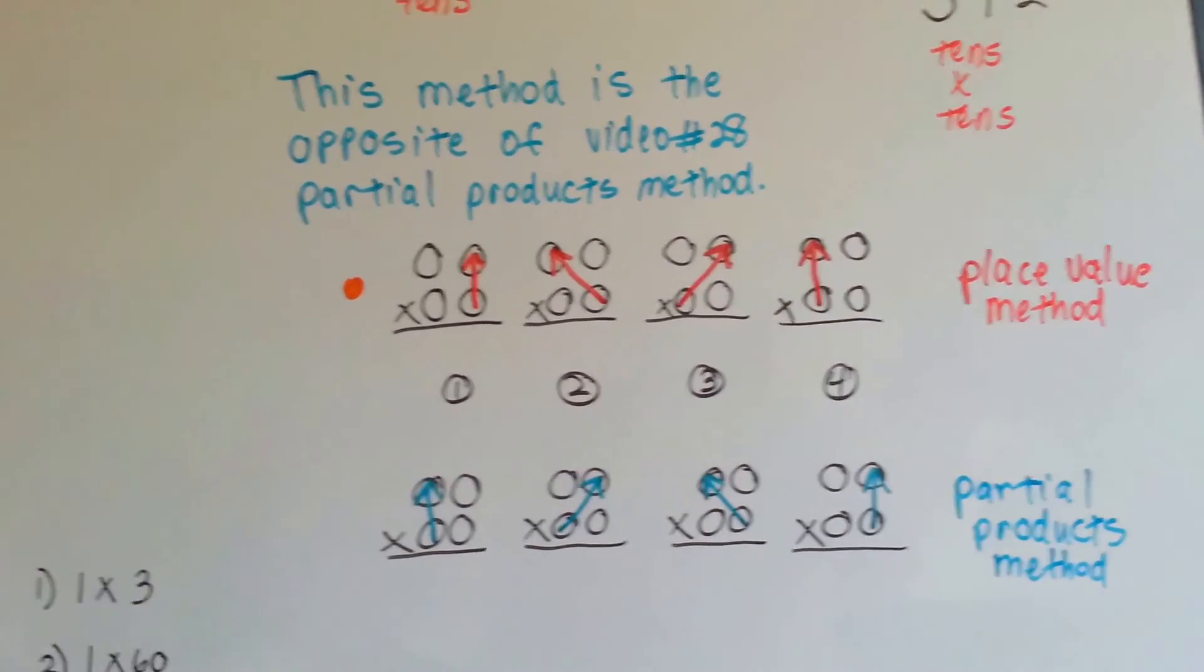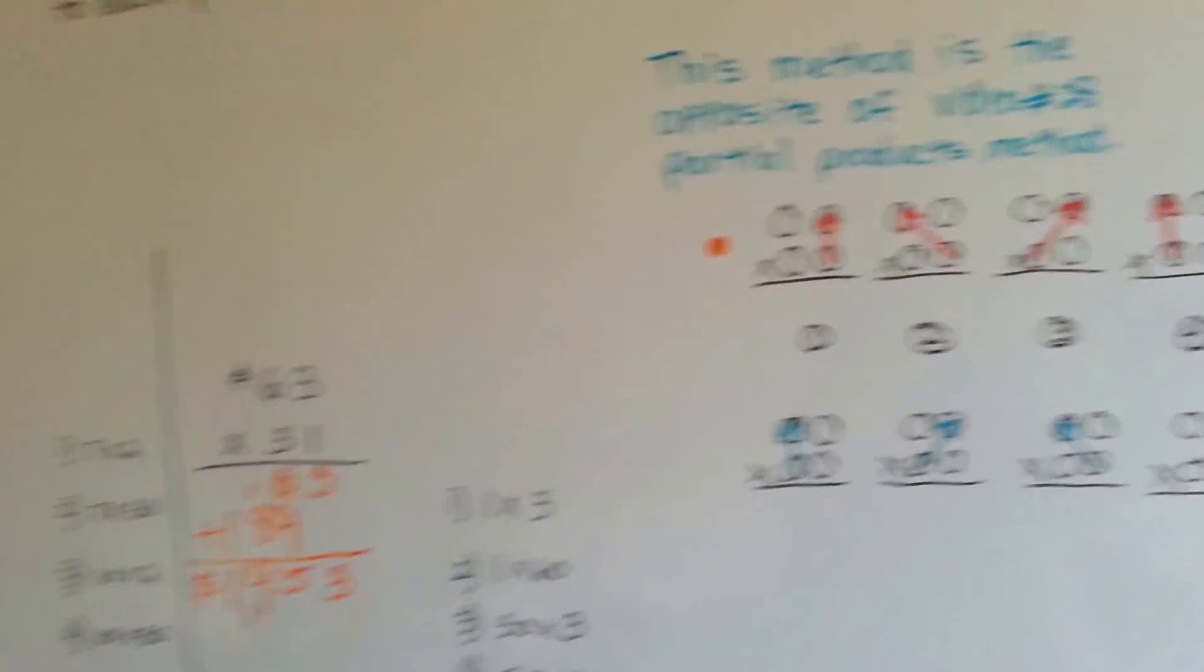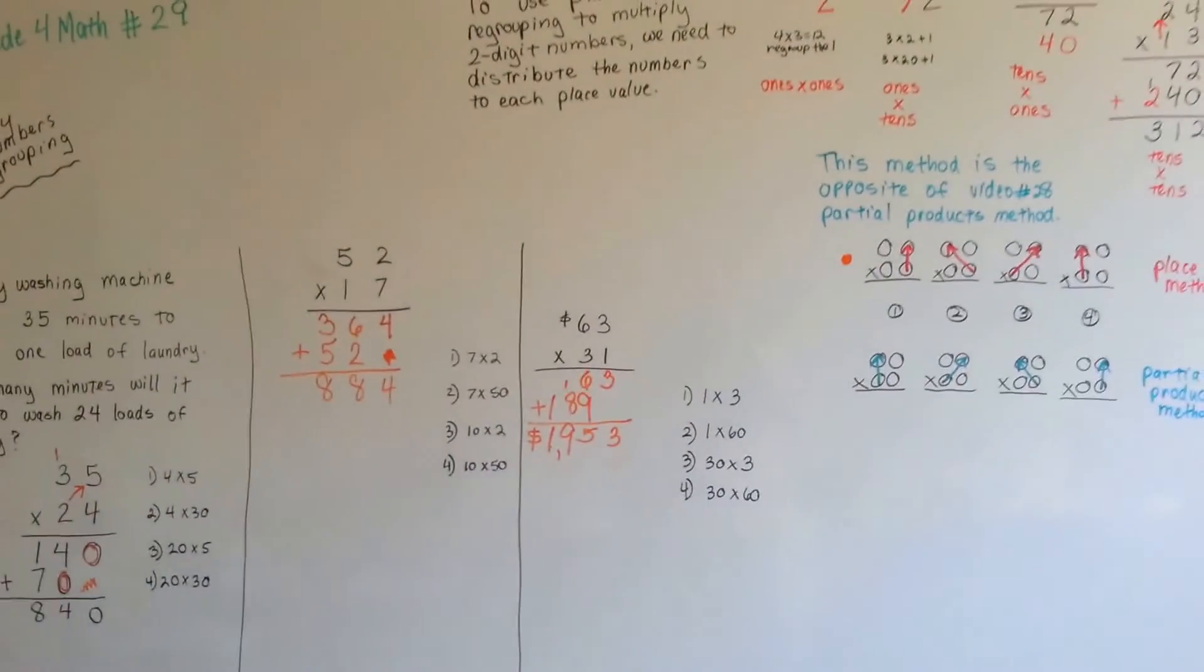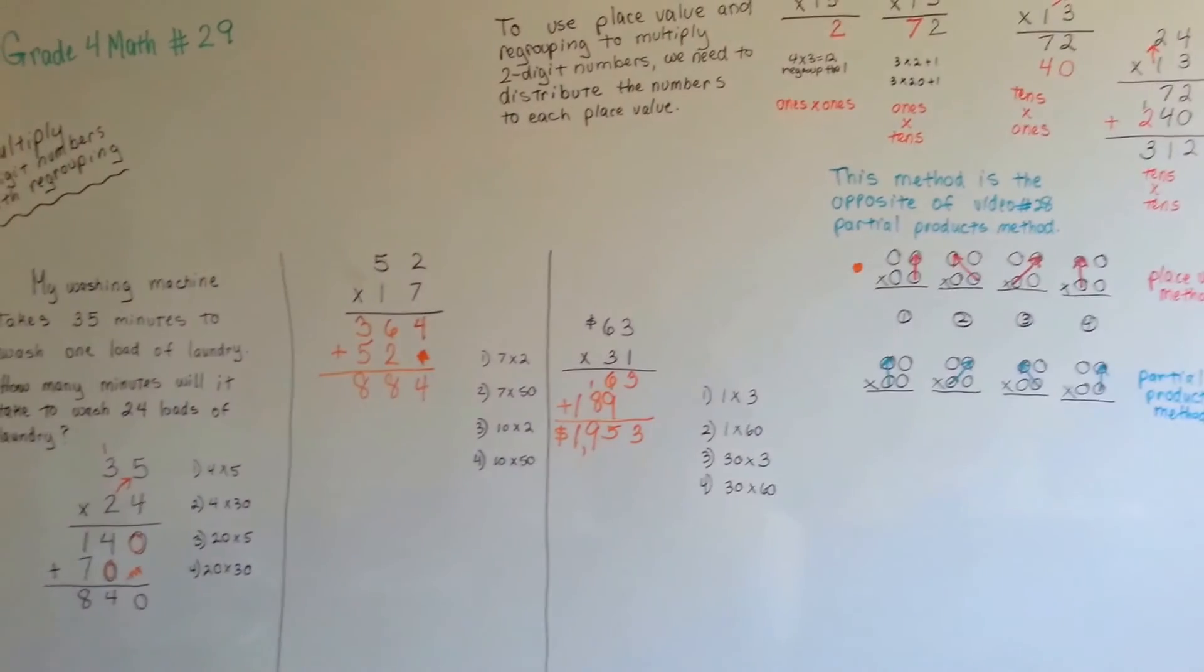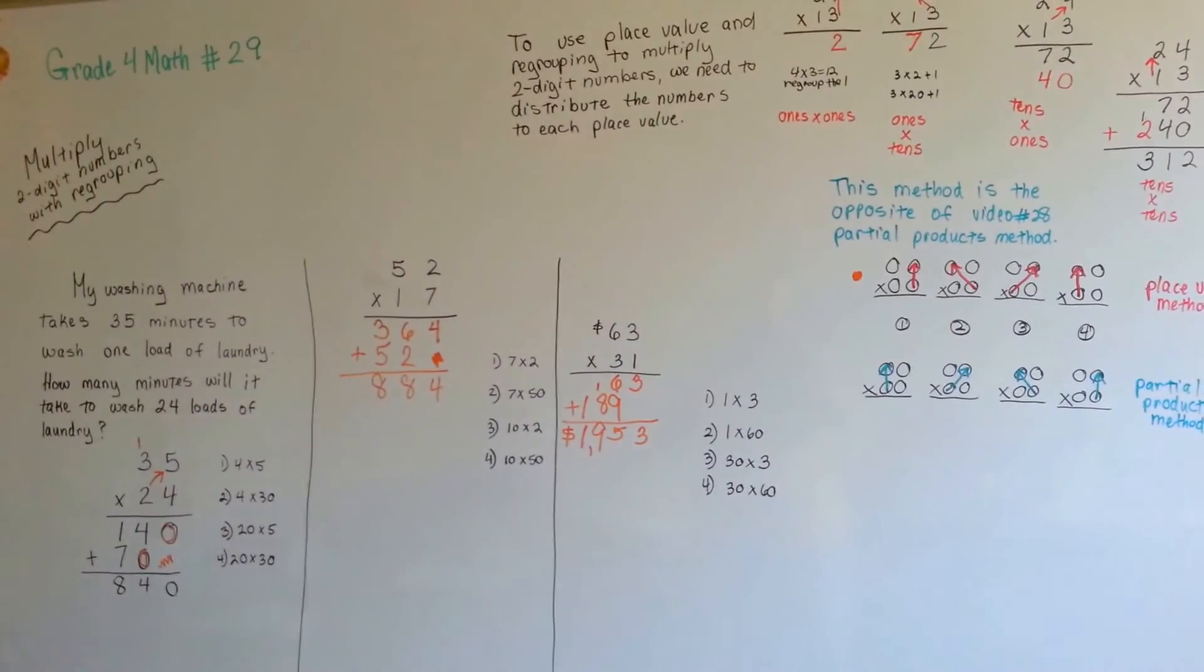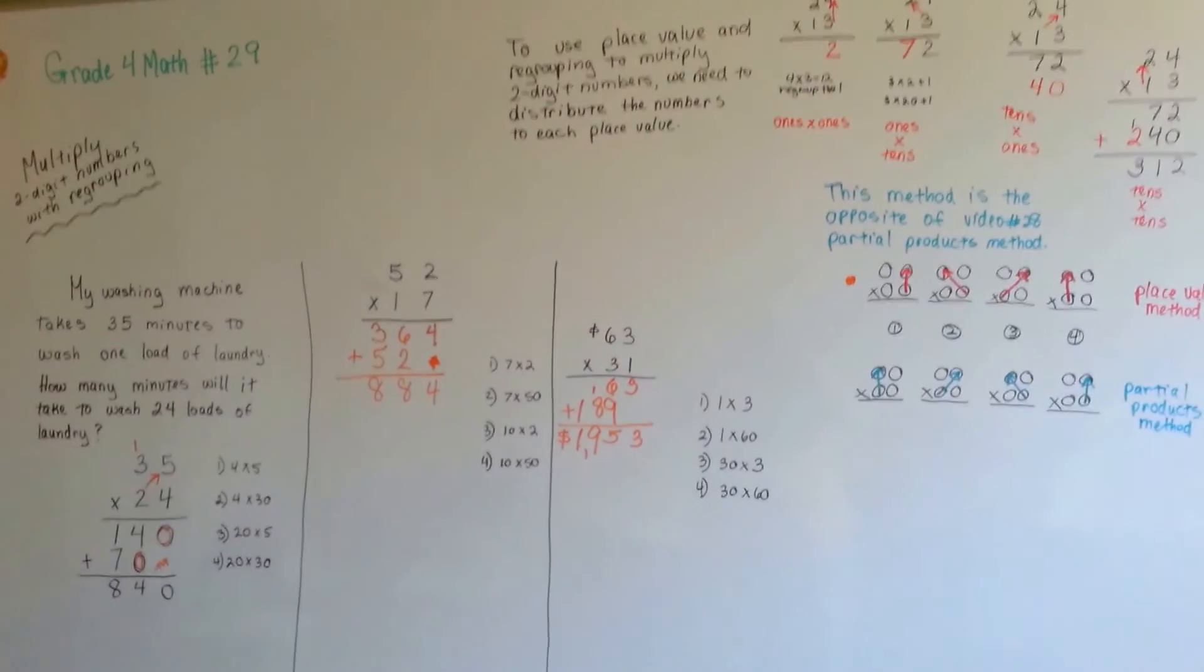So, that is the difference between place value regrouping multiplication and partial products multiplication, but this is my preferred method, the place value regrouping method. Kind of old school.